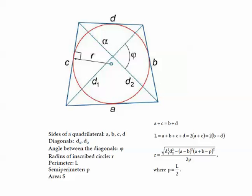Here we have a tangential quadrilateral in which an inner circle is inscribed. The sides of the quadrilateral are a, b, c, and d. The diagonals are given by d₁ and d₂.